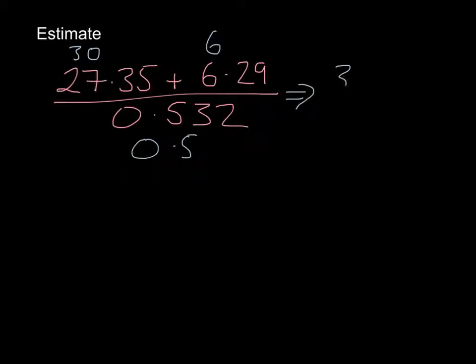On the top, I've got 30 plus 6. And on the bottom, I've got 0.5. So the top line's fairly straightforward.